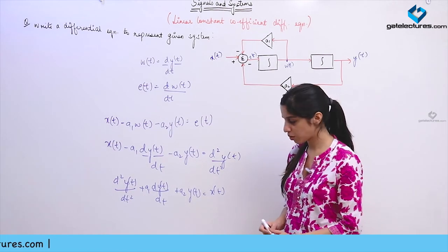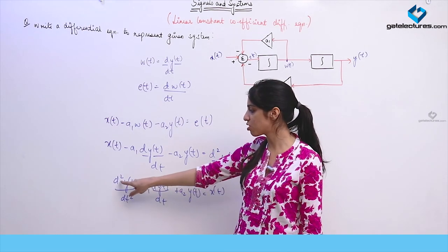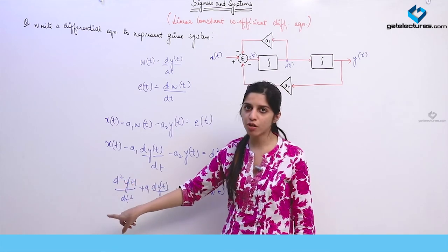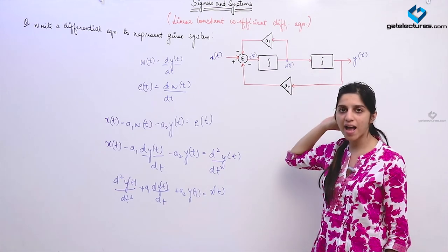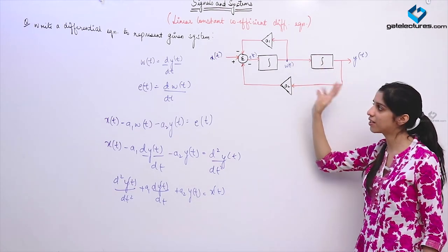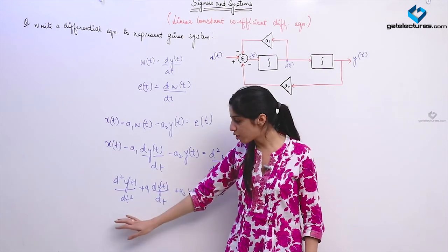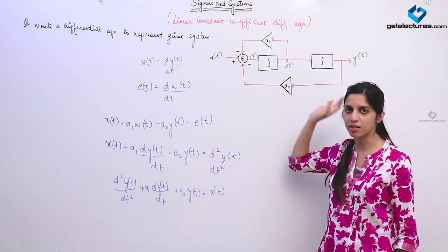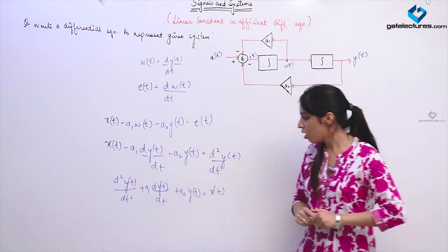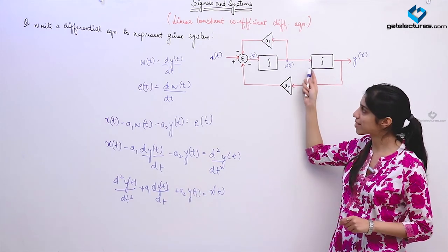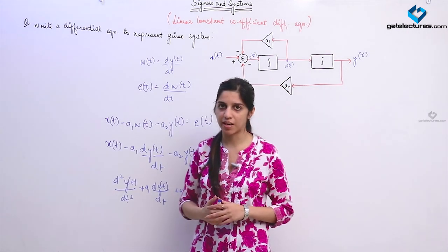One thing to note is that the order of this differential equation is 2 — the highest degree of dY/dt — and this order depends on the number of integrators. If there were 3 integrators, the order of the corresponding differential equation would be 3. The order of the differential equation always equals the number of integrators in the system. With 2 integrators, the order is 2. This is how you represent any system using differential equations in continuous time and difference equations in discrete time.